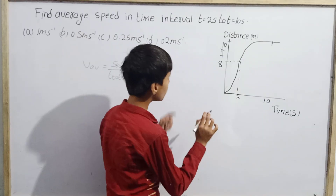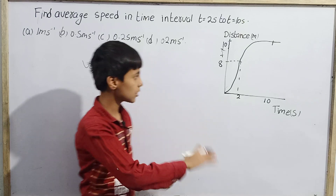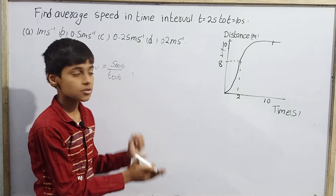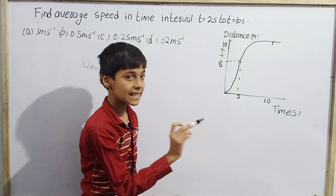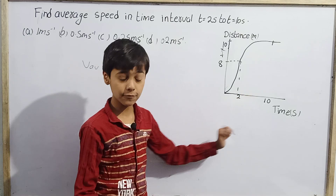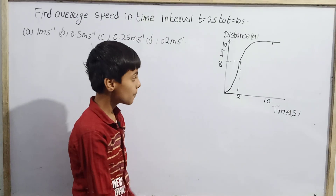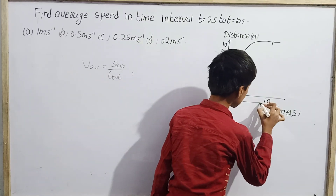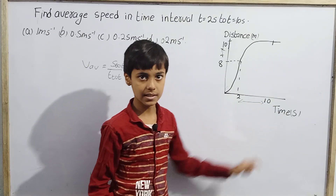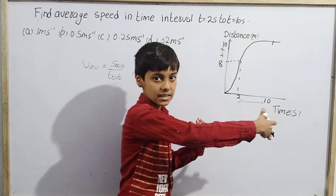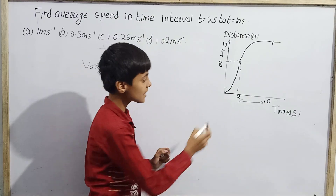We need to find the average speed for the time interval from t = 2 seconds to t = 10 seconds — not an instantaneous speed at a single moment, but over this whole interval. So we must first find the total distance covered in this interval.